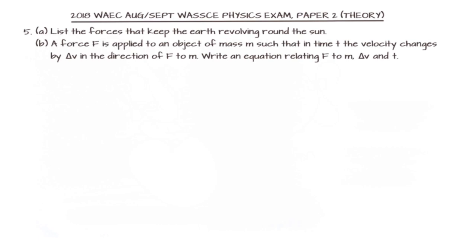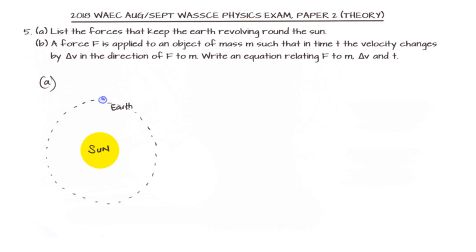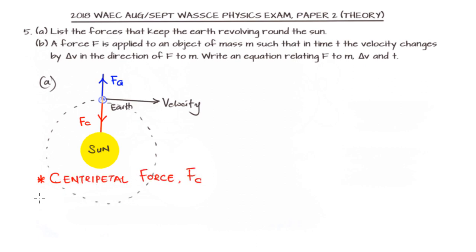In this question, we are asked to list the forces that keep the Earth revolving around the Sun. Why is the Earth not veering off its course of navigation around the Sun? This is largely due to two particular forces: the centripetal force — directed towards the Sun — and the centrifugal force directed away from the Sun. The velocity of the Earth acts tangentially, and these two forces keep it in its orbit.